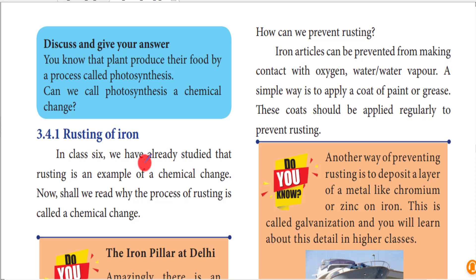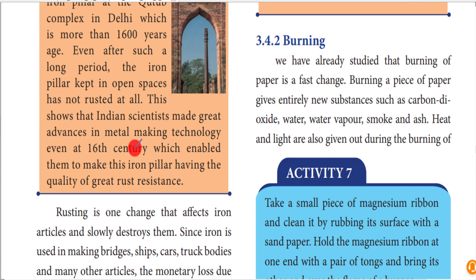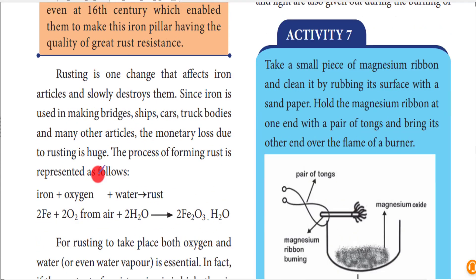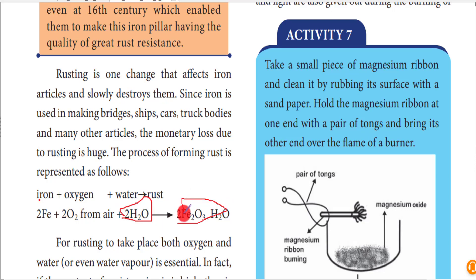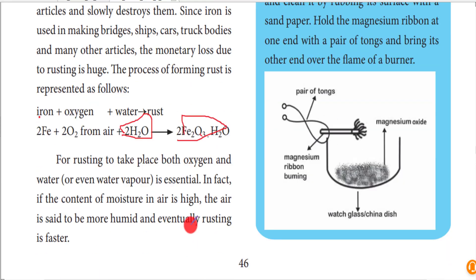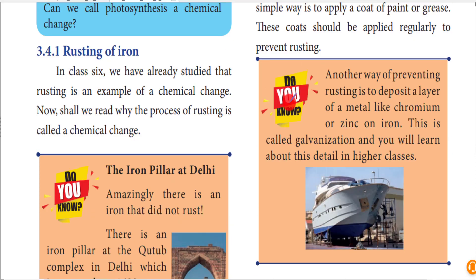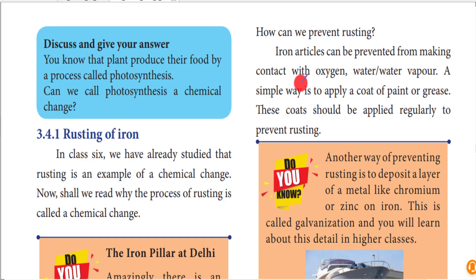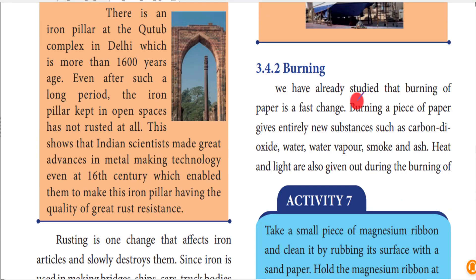First example is rusting of iron. It takes a long time depending on the reaction. When iron reacts with oxygen present in the air, along with water, it produces ferrous oxide - that is rust. To prevent rusting, the contact between water and oxygen must be broken. Examples of prevention include painting, applying grease, or using oil to coat the iron surface.